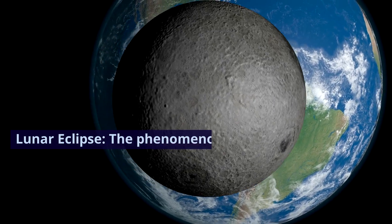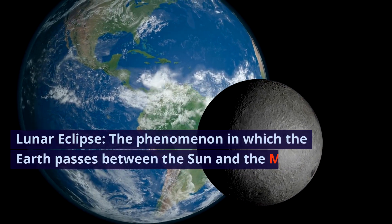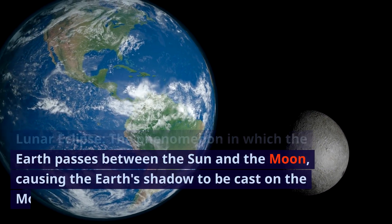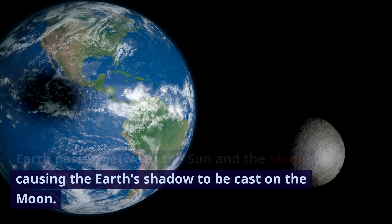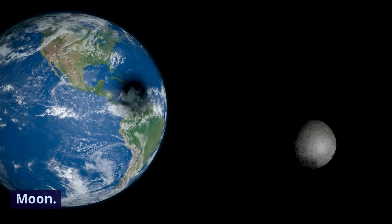Lunar eclipse: the phenomenon in which the Earth passes between the Sun and the Moon, causing the Earth's shadow to be cast on the Moon.